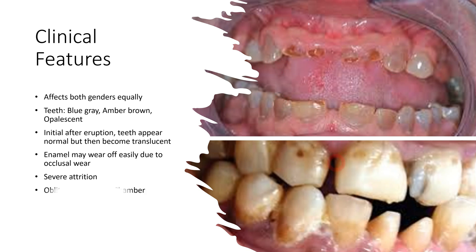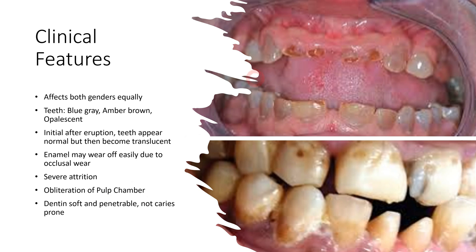Since there is abnormal deposition of dentine, it can sometimes lead to pulp chamber obliteration. The dentine that is present is soft and penetrable. Interestingly, these teeth are not caries-prone — development of caries in patients suffering from dentinogenesis imperfecta is difficult.